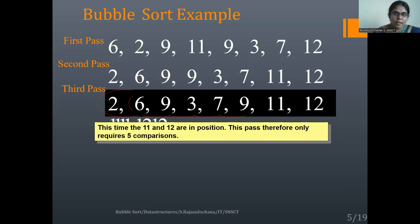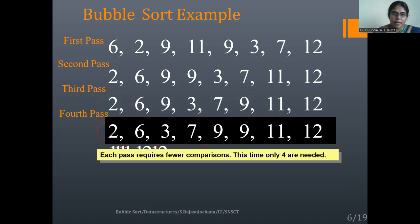At the end of the second pass, this is how the array looks. Now in the third pass, the same process continues: 2 and 6 — no swap; 6 and 9 — no swap; 9 and 3 — swapped; 9 and 7 — swapped; 9 and 9 — no swap; 9 and 11 — no swap; 11 and 12 — no swap. The end of the third pass gives us: 2, 3, 6, 7, 9, 9, 11, 12.